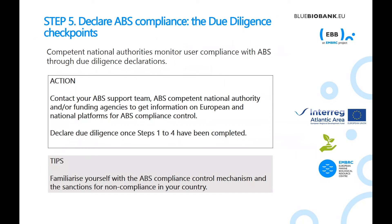Step five is the declaration of ABS compliance made at due diligence checkpoints. The Competent National Authority in the state where utilisation is carried out can advise on how and when due diligence declarations should be made. It is recommended that you contact your ABS support team, ABS Competent National Authority, and funding agencies to get information on European and national platforms for ABS compliance control. You should make your due diligence declaration once steps one to four have been completed and at any other required checkpoints. Users should also familiarise themselves with the ABS compliance control mechanisms and the sanctions for non-compliance in your country.